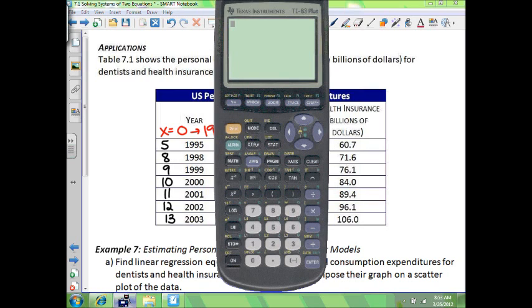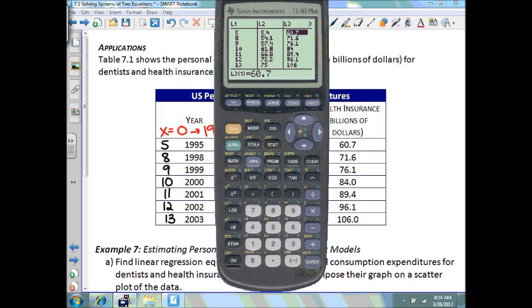What I want you to do is enter this list. So you're going to press the stat button, press enter on edit. I've got list 1, 2, and 3 already made. In list 1, x equals 0 equals 1990, so 95 will be 5. That's why I started here at 5.